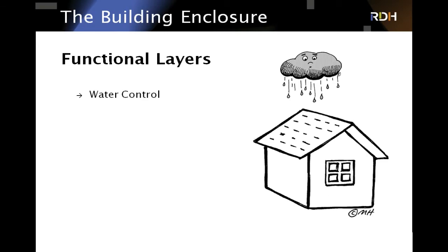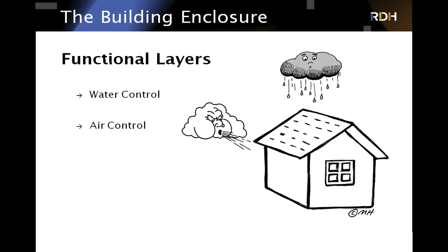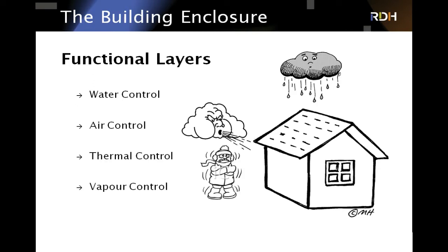The first and most important functional layer is the water control layer — I won't get into that today. These layers are in order of importance. Air control is definitely the second most important control layer, and that's what I'm going to talk about — how we keep air from flowing through the enclosure in and out of the building and within it. Two other important layers, less important than the first two, are thermal control — insulation — and vapor control, which is a separate issue that I'll relate to air control.